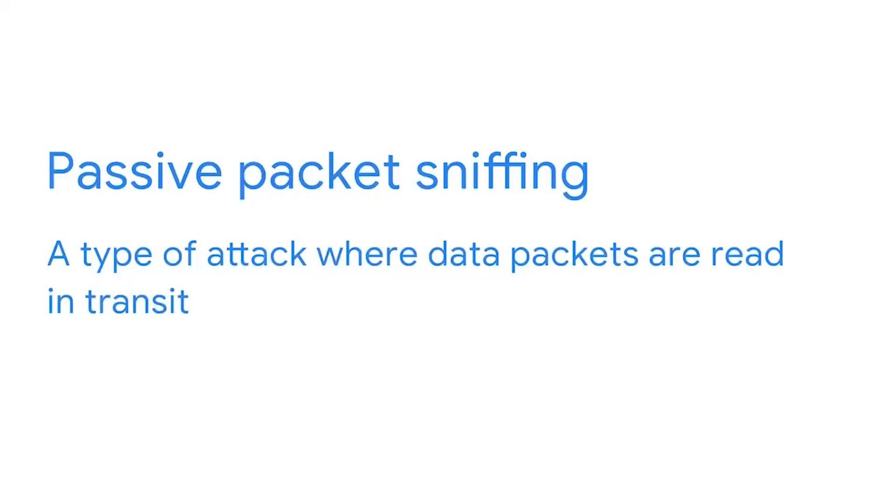Passive packet sniffing is a type of attack where data packets are read in transit. Since all the traffic on a network is visible to any host on the hub, malicious actors can view all the information going in and out of the device they are targeting. We can compare a passive packet sniffing attack to a postal delivery person maliciously reading somebody's mail — the postal worker has the right to deliver the mail, but not the right to read the information inside.